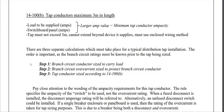There are three separate calculations which typically need to take place for a standard distribution tap installation. The order is important as the branch circuit ratings must be known prior to the tap being sized. Step one: branch circuit conductor sized to carry load. Step two: branch circuit overcurrent sized to protect branch circuit conductor. Step three: tap conductor sized according to 14-100B.